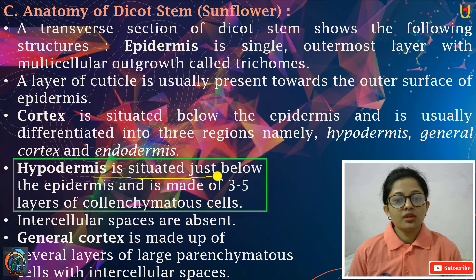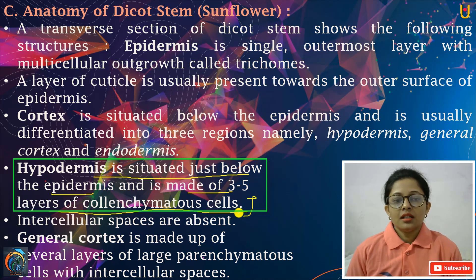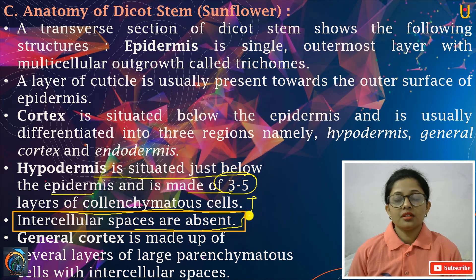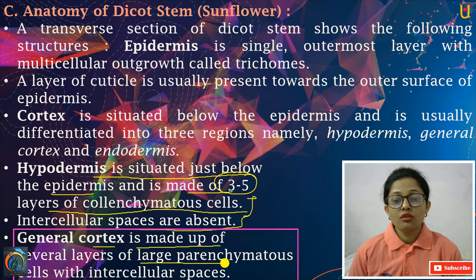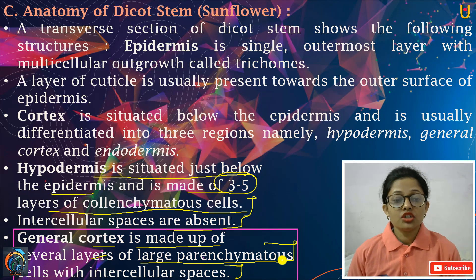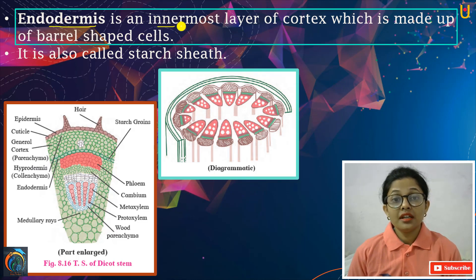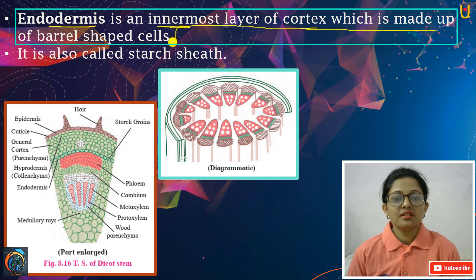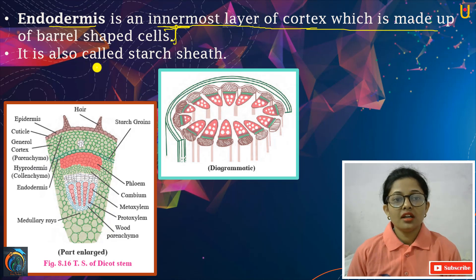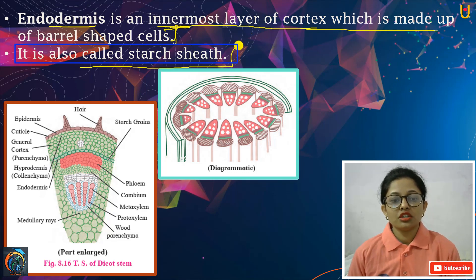Sabse pahli hai hamare bahar wali mein, jise hum log bolte hain hypodermis. Phir mid wali aati hai jise hum log bolte hain general cortex, aur sabse innermost wali aati hai jise hum log kehte hain endodermis. Hypodermis is situated just below the epidermis and is made up of three to five layers of collenchymatous cells. Intercellular spaces are absent. General cortex is made up of several layers of large parenchymatous cells with intercellular spaces. Endodermis is the innermost layer of cortex, which is made up of barrel shaped cells. It is also called starch sheath.